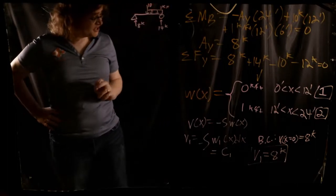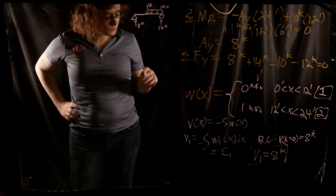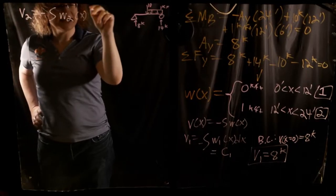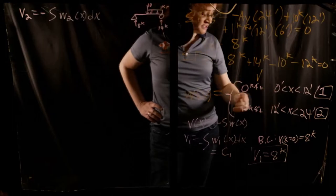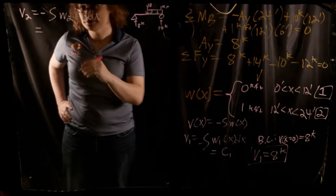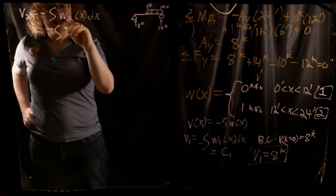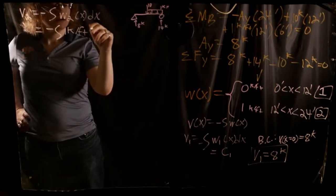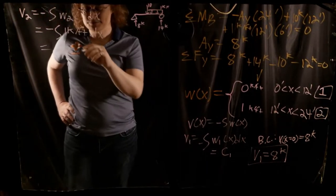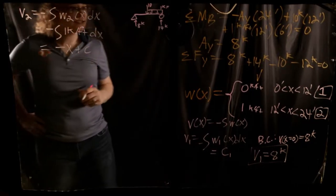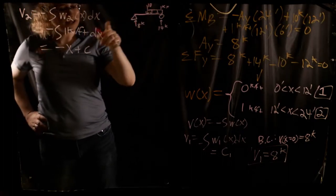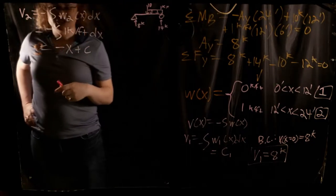Now I need to find the shear in region 2. V2 equals the negative integral of w2 dx. Since w2 is 1 kip per foot, that gives us the negative integral of 1 dx, which equals negative x plus a constant C2,1.